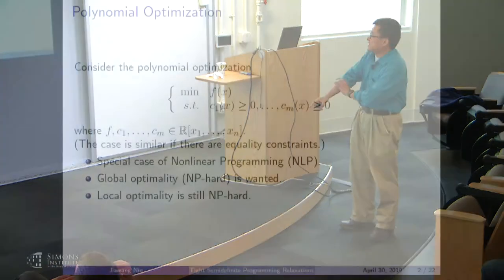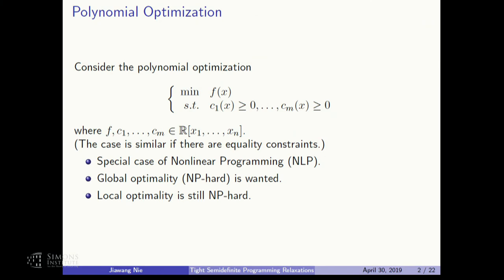What is polynomial optimization? Suppose we have: first, minimize f(x) — this is called the objective — and we have the constraints. In life, we might have both equalities and inequalities, but here, for convenience, let's consider the inequality case. In this talk, we assume everything is polynomials. This is called polynomial optimization, and x is an n-dimensional vector.